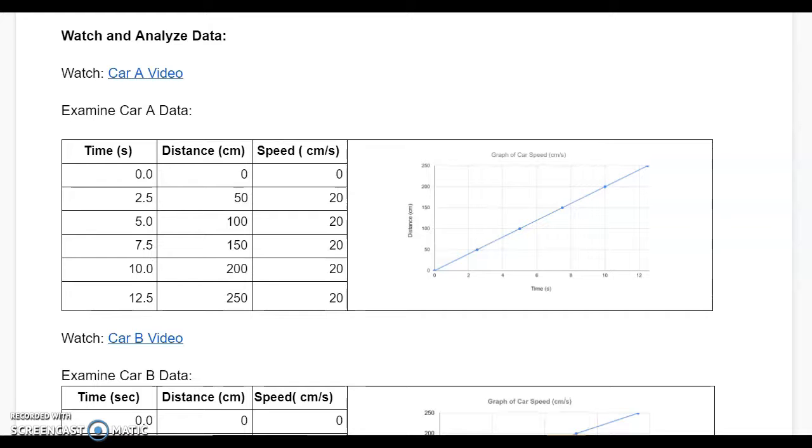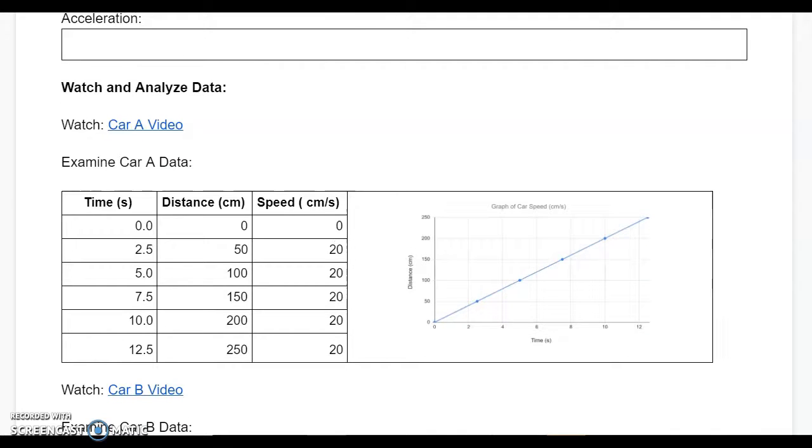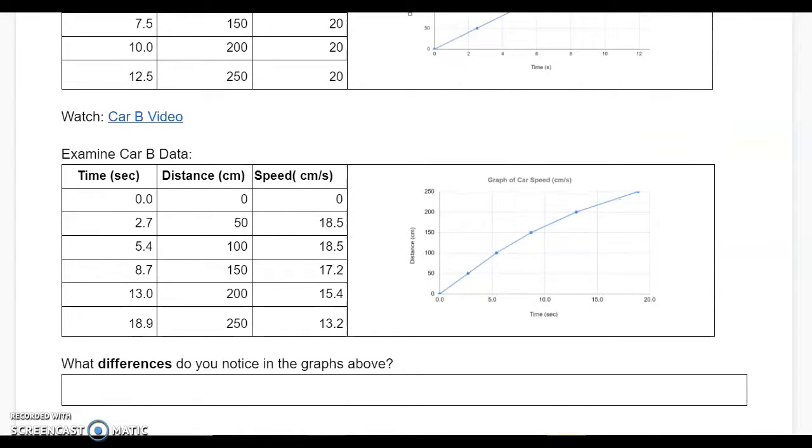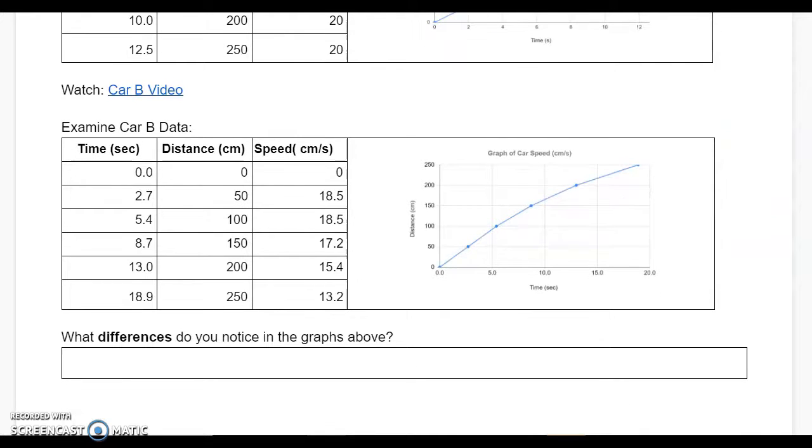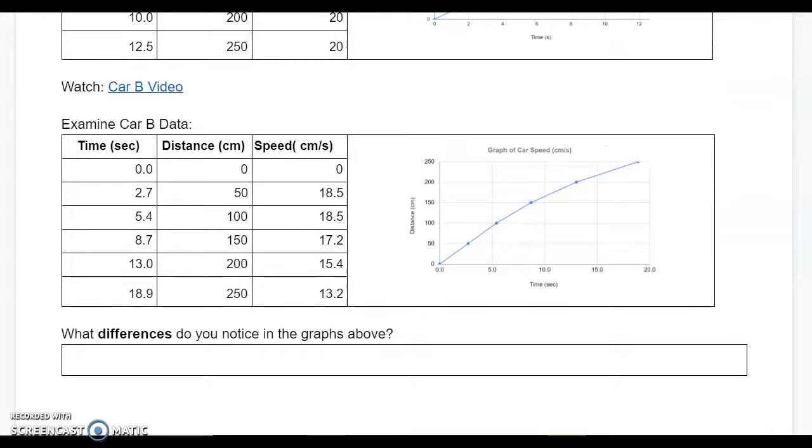Next, you'll watch car A and car B videos and look at the data charts that follow. For car A, you'll be examining the car A data chart and watching the car A video, and for car B, you'll be watching the car B video and examining the car B data chart. You're going to want to notice what differences you see in each of these two graphs and note that answer below.